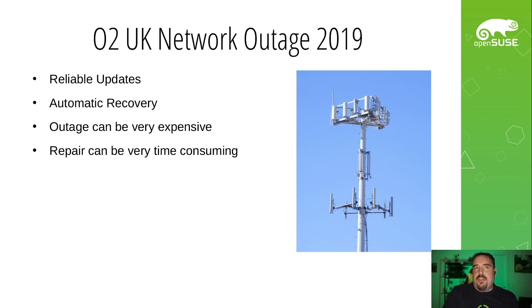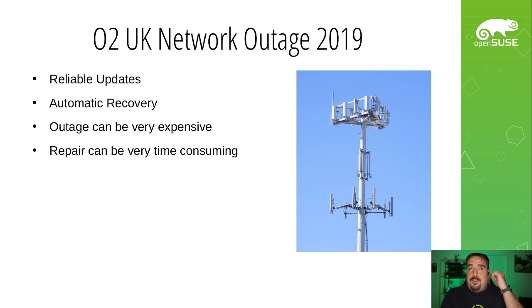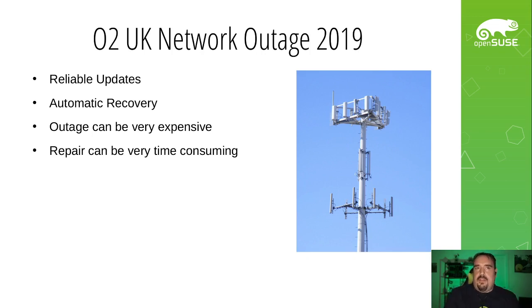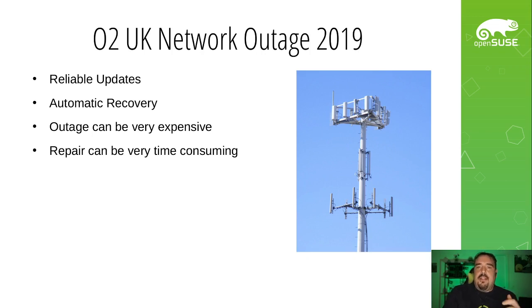Unfortunately, that also meant they didn't have any way of pushing a new firmware update to fix their cell towers. Poor engineers had to go out to every single O2 cell location in the UK and manually reflash the firmware — incredibly expensive and time-consuming — all because they didn't have some way of automatically rolling back the update when it went horrifically wrong.